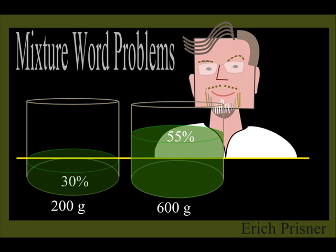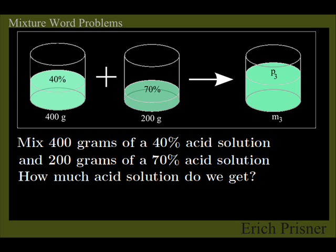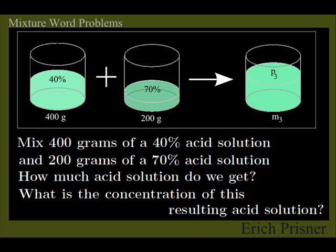The simplest version goes as follows. 400g of a 40% acid solution and 200g of a 70% acid solution are mixed together into one container. How much acid solution do we get? And what is the concentration of this resulting acid solution?